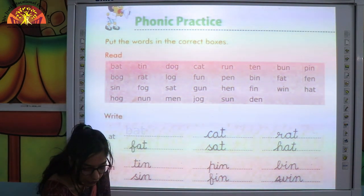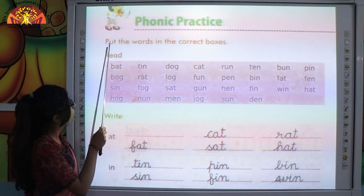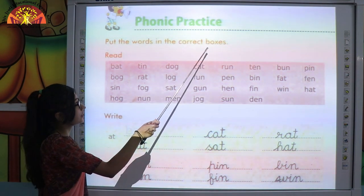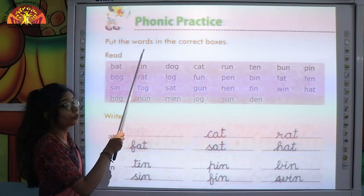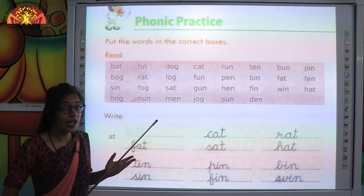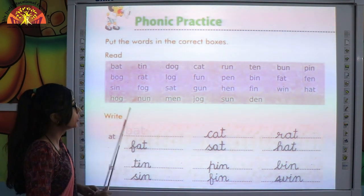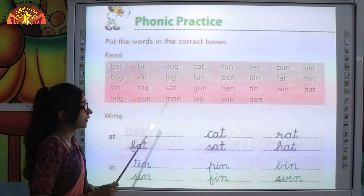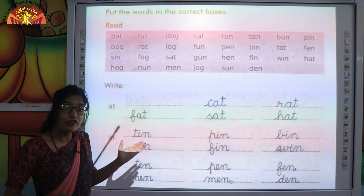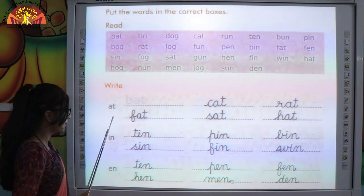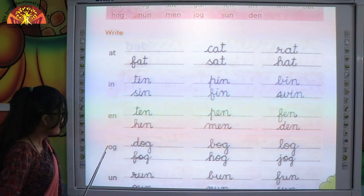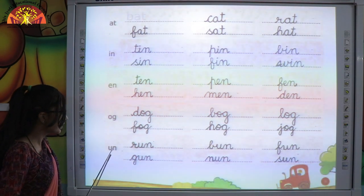Now let's read the question: put the words in the correct boxes. So kids, what you have to do? You have to put these words in the correct boxes according to their phonic sounds like at, in, og, and last one is an.